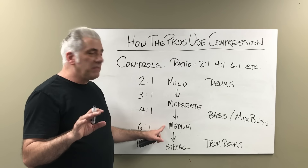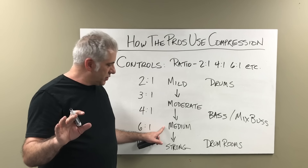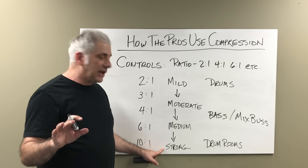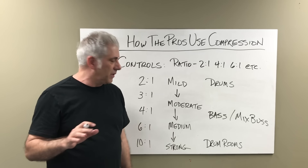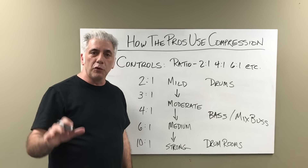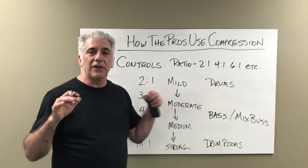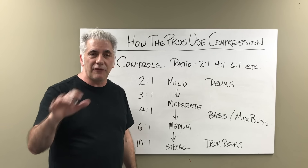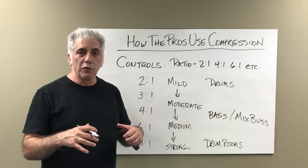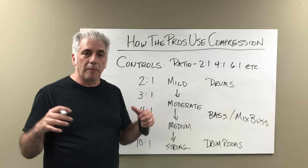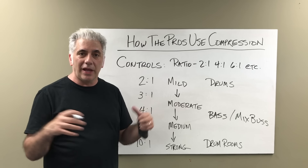You start getting into medium compression around 6:1, and stronger compression around 10:1. That's where you start compressing your room mics — like for that Led Zeppelin 'When the Levee Breaks' kind of sound — compressing those room mics so they start to pump and sound like they have a lot of energy.